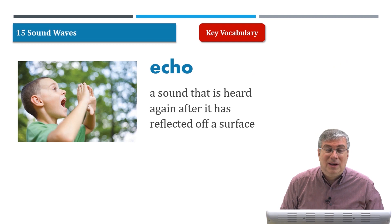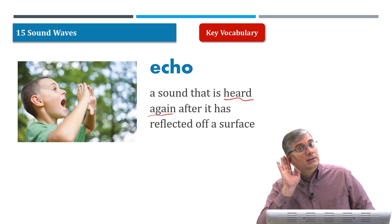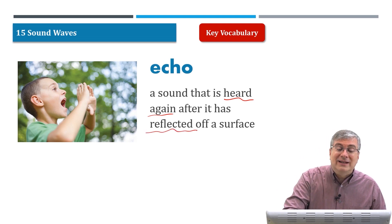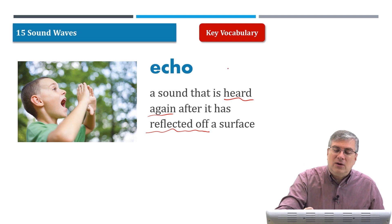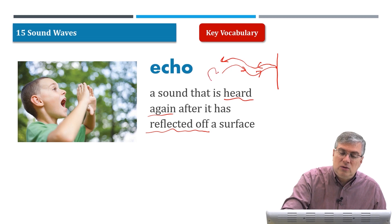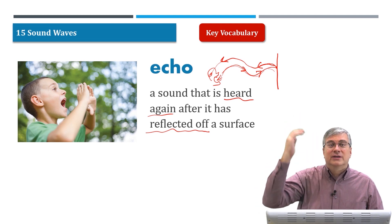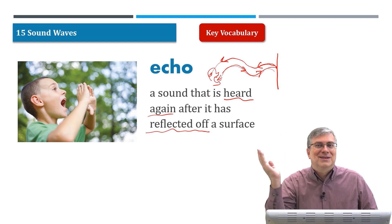Next we have 'echo.' Echoes are kind of interesting — they're fun to play with. An echo is a sound that is heard again after it has reflected off a surface. The sound energy travels as a wave, hits something, bounces off, and comes back. If you're in the mountains near cliffs you can say 'hello' and it echoes back to you. We call that phenomenon an echo.